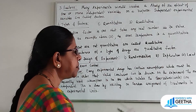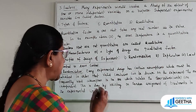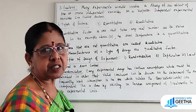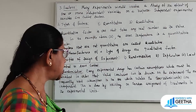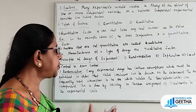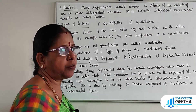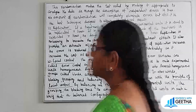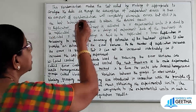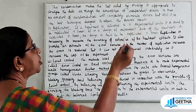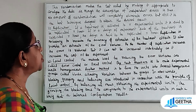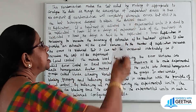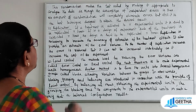This is done by insisting on random assignments of treatments to the experimental units. Random assignment gives independence to the observations. Randomization makes the design valid by making it appropriate to analyze the data as though the assumption of independent errors is true.